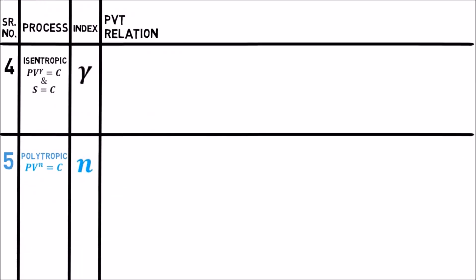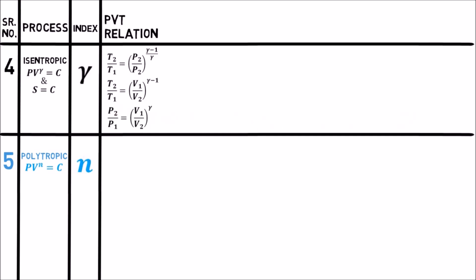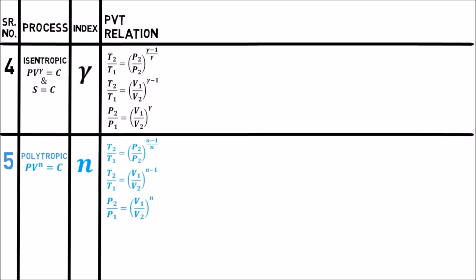The PVT relations for isentropic or reversible adiabatic process in terms of temperature and pressure is T2 by T1 equal to P2 by P1 raised to gamma minus 1 divided by gamma. And in terms of temperature and volume, it is T2 by T1 equal to V1 by V2 raised to gamma minus 1. Lastly, the PVT relations for polytropic process are same as isentropic process, only index gamma is replaced by index n.